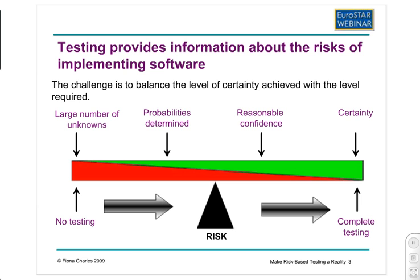We test for a number of reasons, but principally to provide information about the risks of implementing software for our customers. When we don't do anything, there's a huge number of unknowns about our software systems. If we were able to do complete testing, then we might have certainty. But in reality, we have to balance, and we balance on a fulcrum of risk.